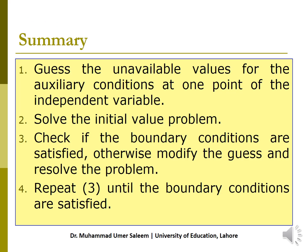To summarize: guess unavailable values for the auxiliary conditions at one point of the independent variable. In this case, I took the first guess as 0 and second as 1, and then with interpolation I obtained a guess that satisfies the boundary condition. Then solve the initial value problem, check if the boundary condition is satisfied; otherwise, modify the guess and repeat the complete process until the boundary conditions are satisfied.